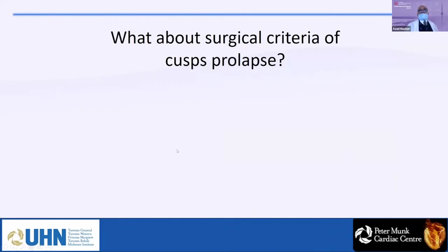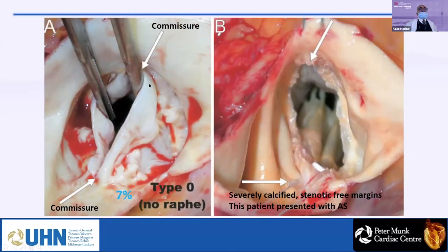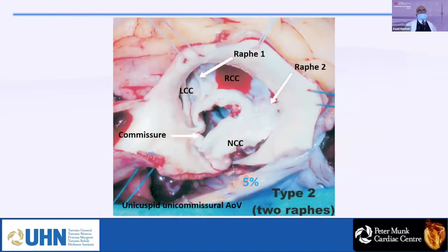Professor Sievers from Germany classified bicuspid aortic valves in 304 patients as type 0 (no raffae, true bicuspid, only 7% of cases), type 1 (one raffae, most commonly between right and left, 88% of cases, the most common form seen from the surgeon's perspective), and type 2 (two raffae). The commissure angle is important: ideally 180 degrees in a true bicuspid, but may be less than 120 degrees in severe cases.